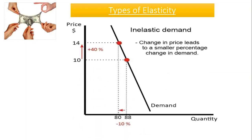The second type is inelastic demand — a demand that responds somewhat, but not to a great deal, to changes in price. The elasticity value is usually between zero and one. For example, if price increases by 40% but quantity demanded decreases by only 10%, dividing 10 by 40 gives a price elasticity of demand less than one. This is inelastic demand.